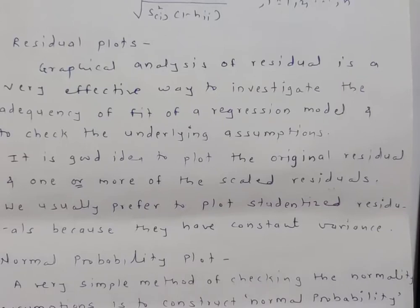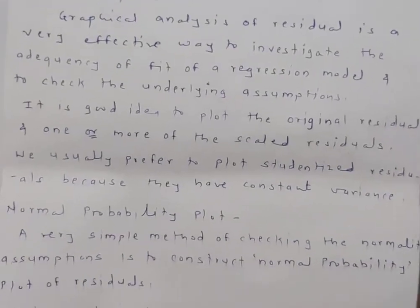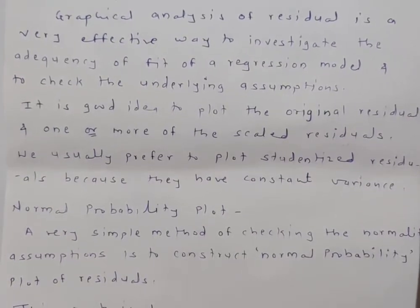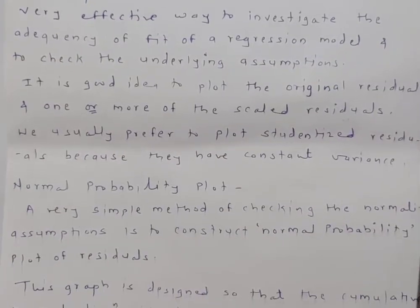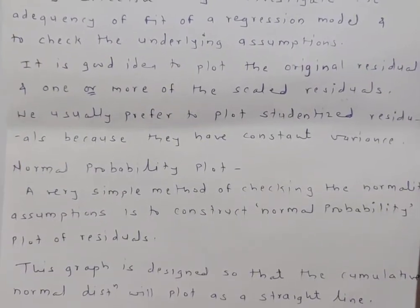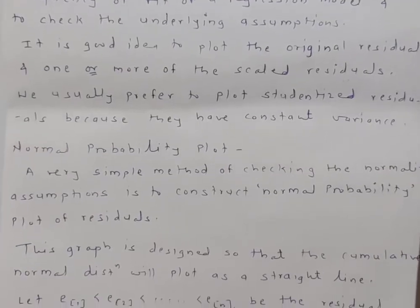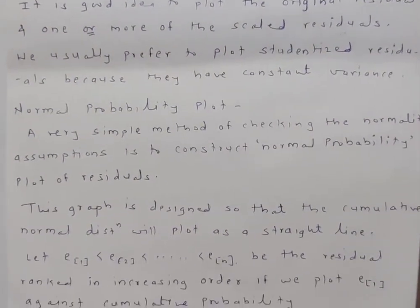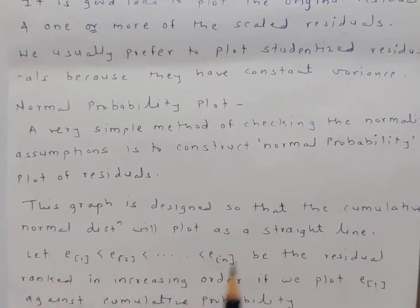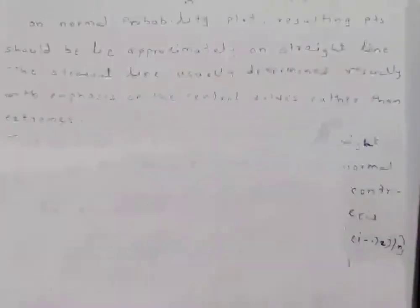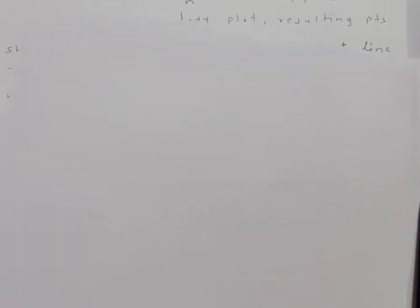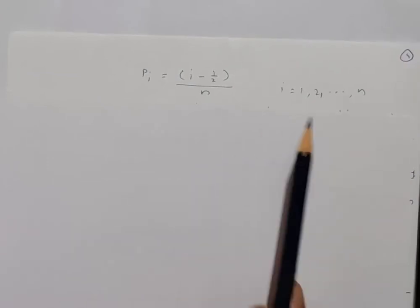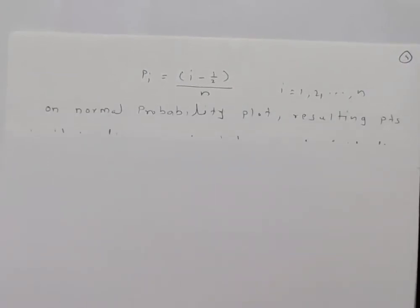The first residual plot is the normal probability plot. A very simple method of checking the normality assumption is to construct a normal probability plot of residuals. This graph is designed so that the cumulative normal distribution plots as a straight line. Ranking residuals in increasing order and plotting e_i against cumulative probabilities p_i = (i − 0.5)/n, for i = 1 to n.